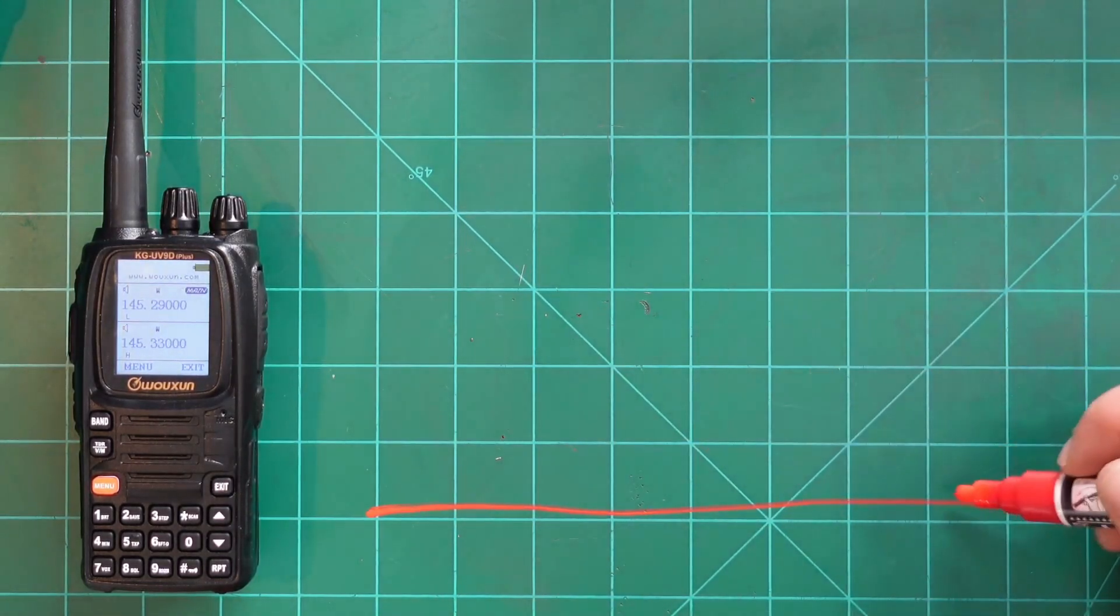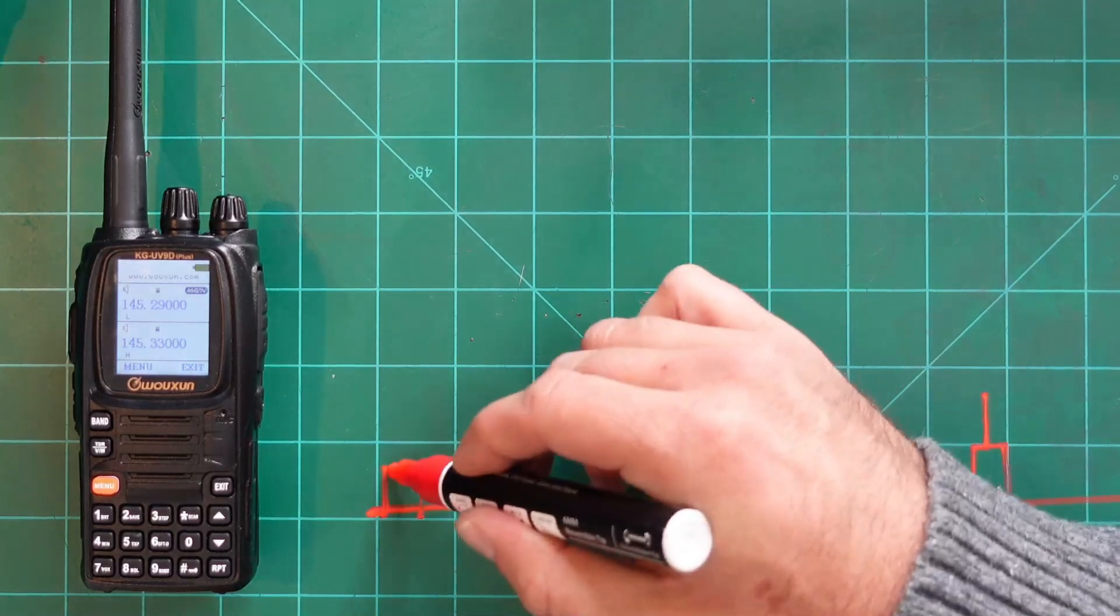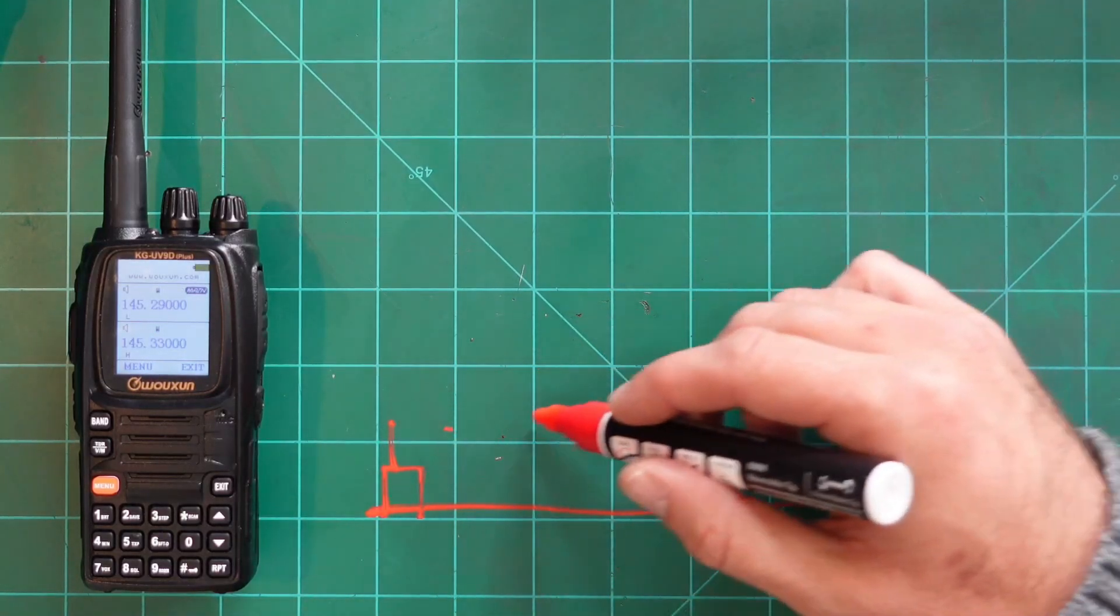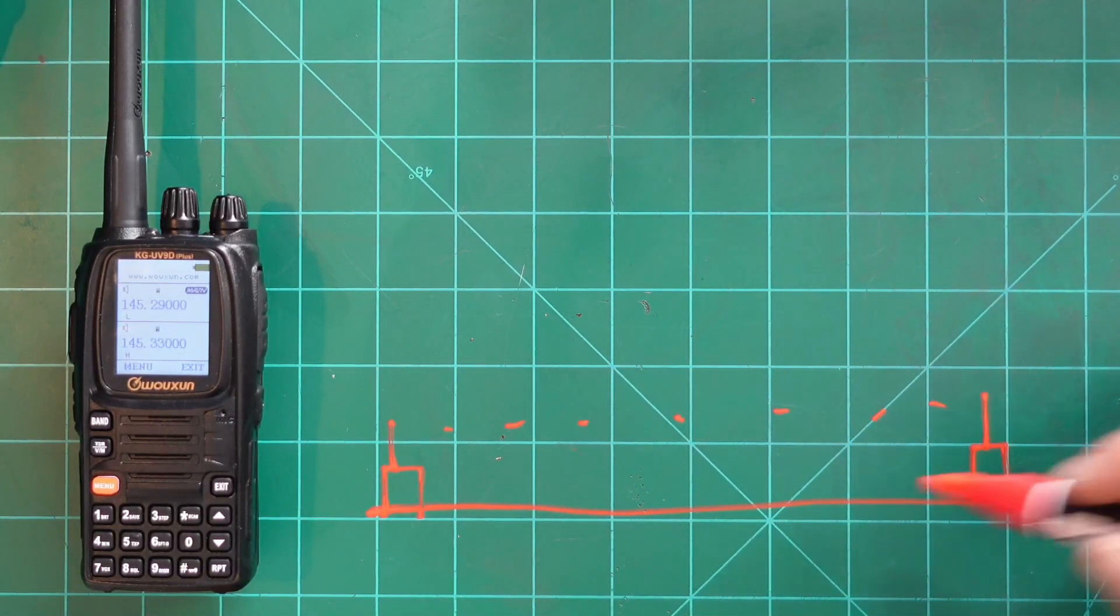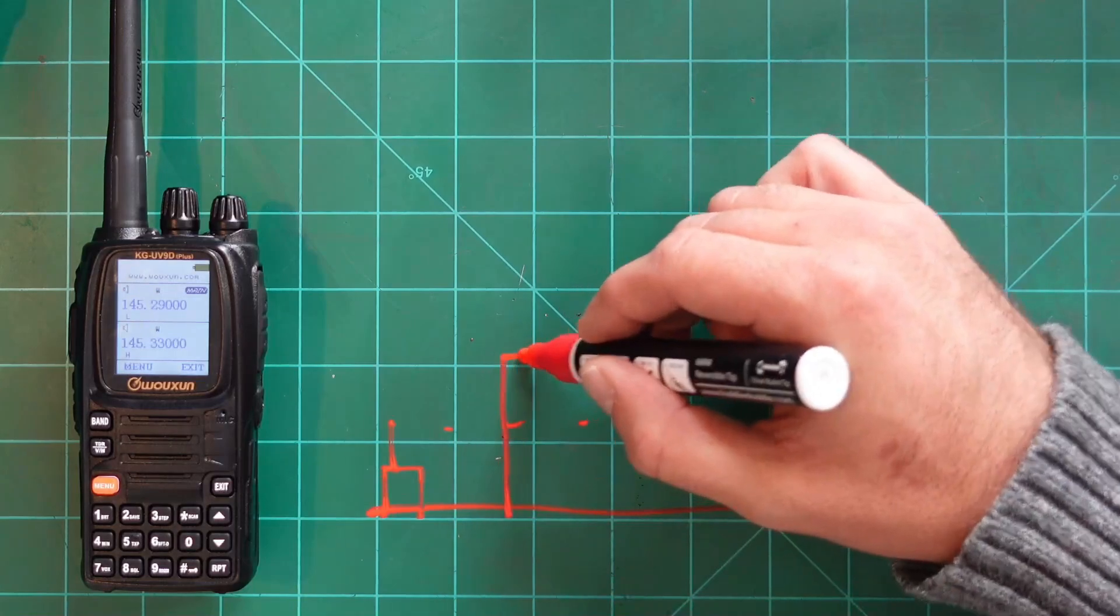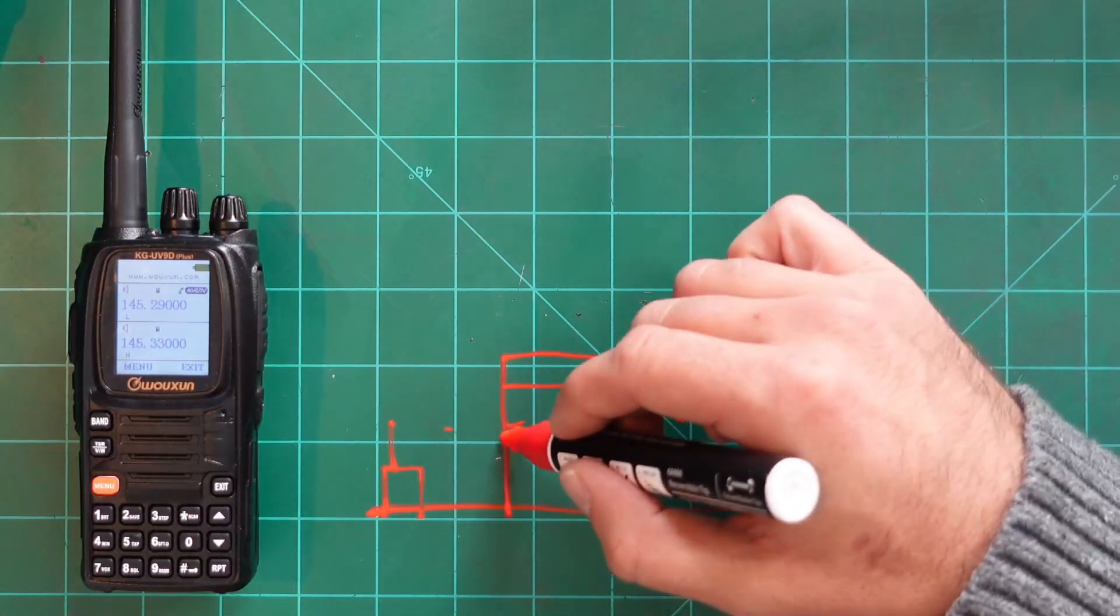If this is flat ground and you're trying to talk to a radio that's right here and you're right here, maybe you guys have no problem talking five, ten miles if it's direct. But in every scenario in the world, there's some sort of variable, right? A building.